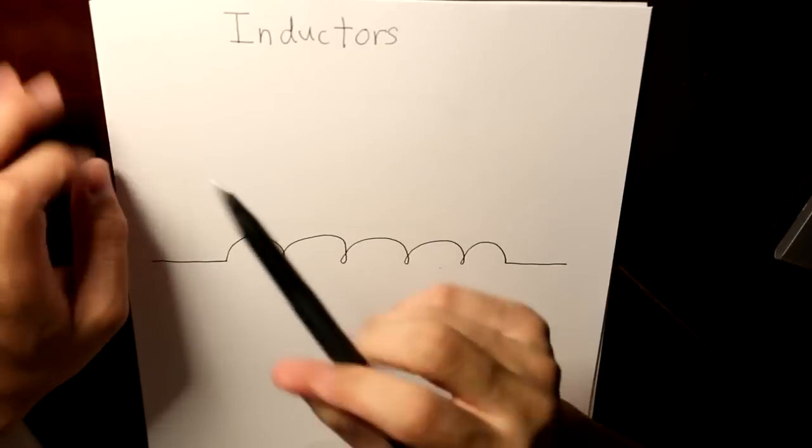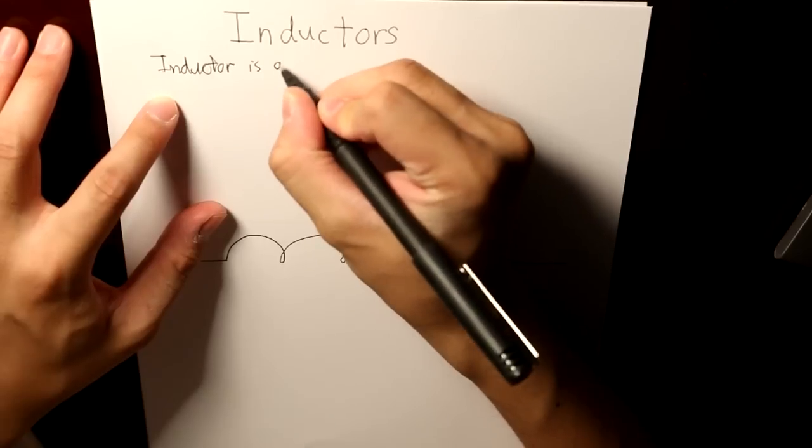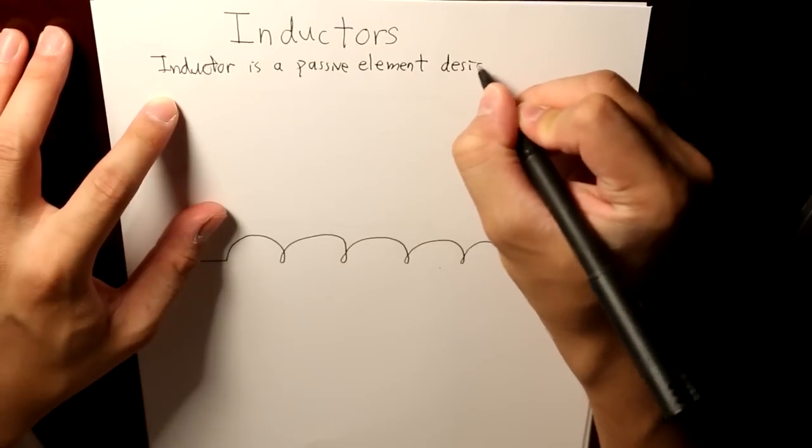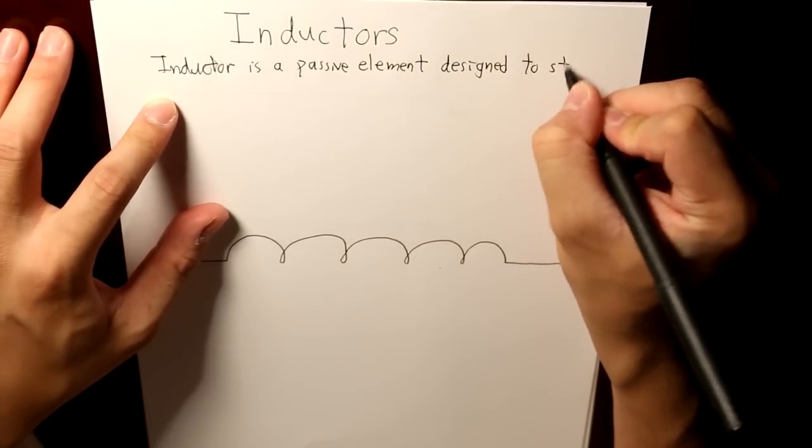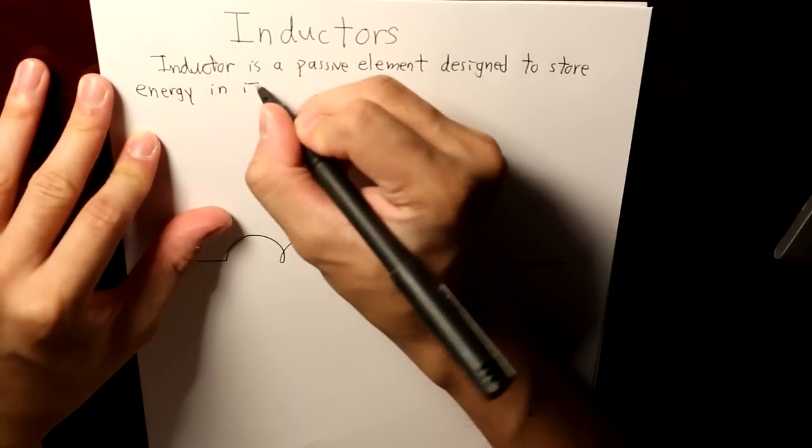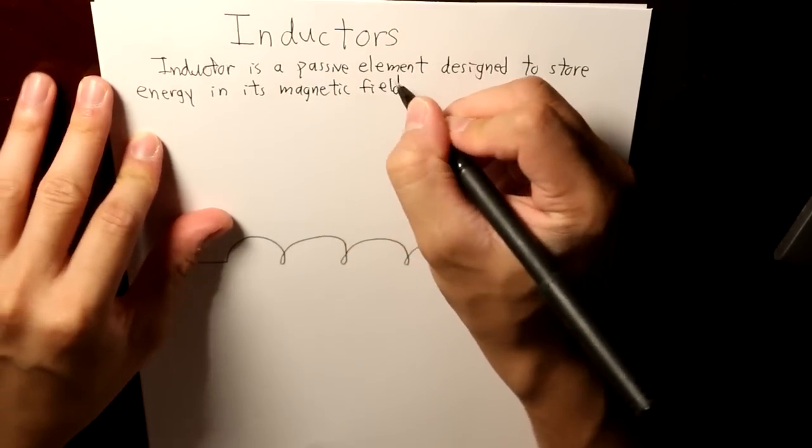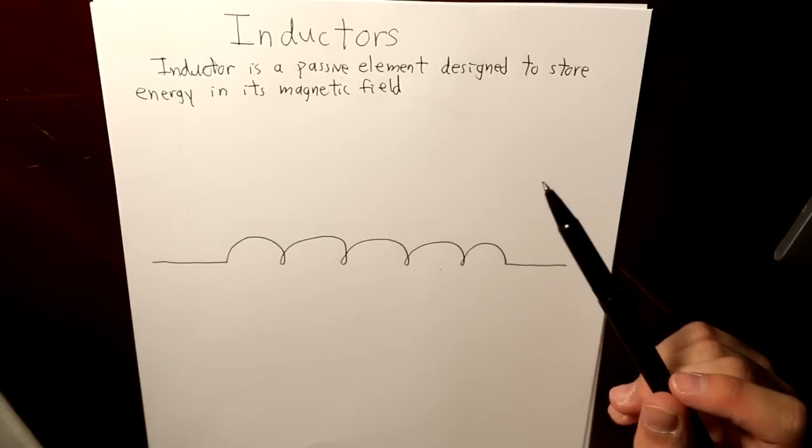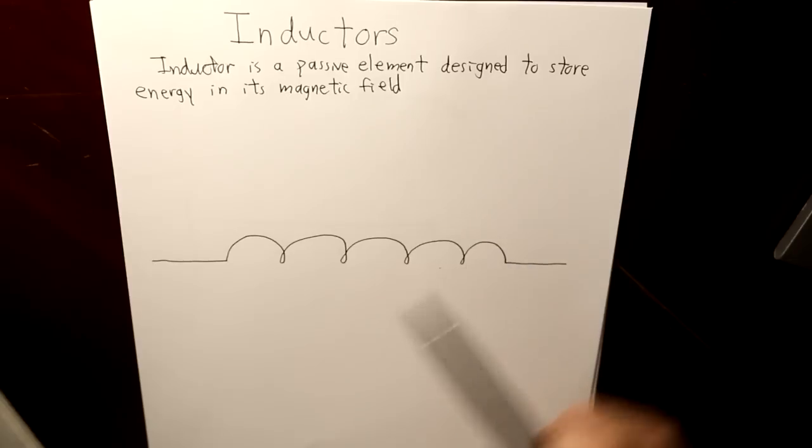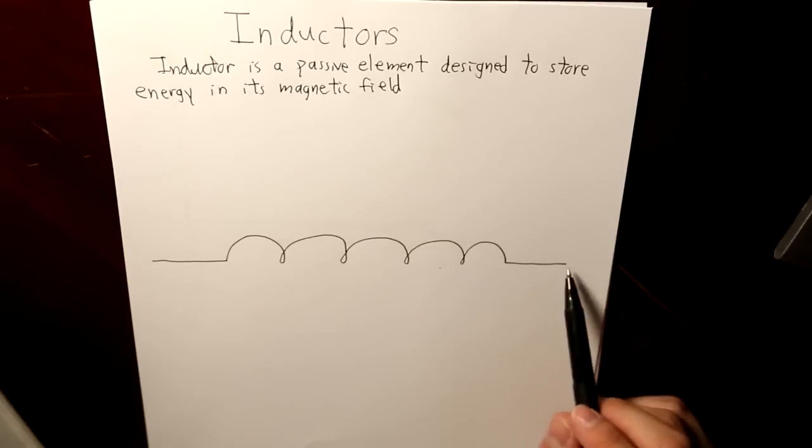Inductor is a passive element designed to store energy in its magnetic field. And an inductor in the physical world simply consists of a coil like this of conducting wire. So this is our wire and this is our coil.